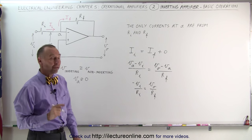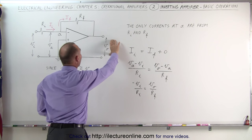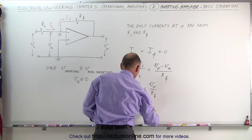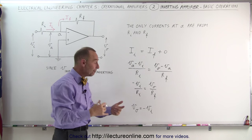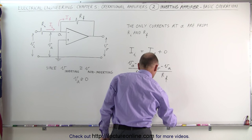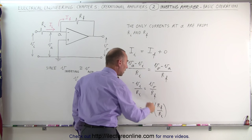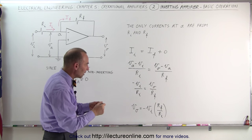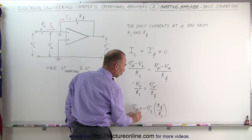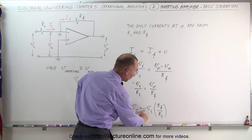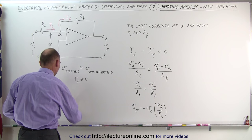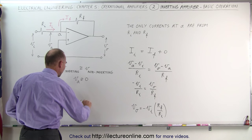Now if we solve that equation for V sub O, we get the output voltage as a function of the input voltage. V sub O is equal to the negative of V sub I times R sub F divided by R sub I. That negative makes it an inverting operational amplifier. It's this ratio R sub F over R sub I that gives you the amplification — for example, if the ratio is 5 to 1, the output voltage will be 5 times the input voltage, although negative. This ratio R sub F over R sub I is also known as the gain factor of the amplifier.